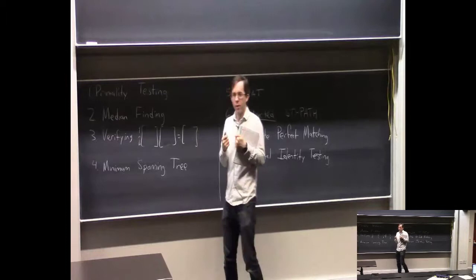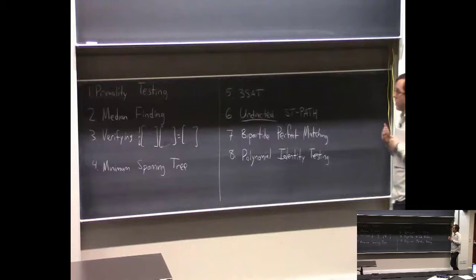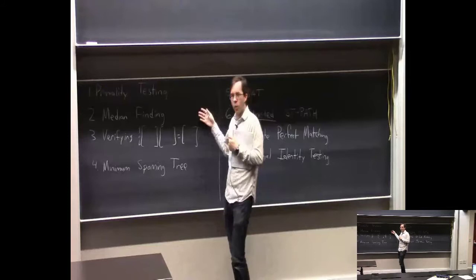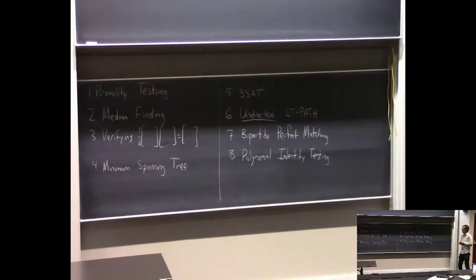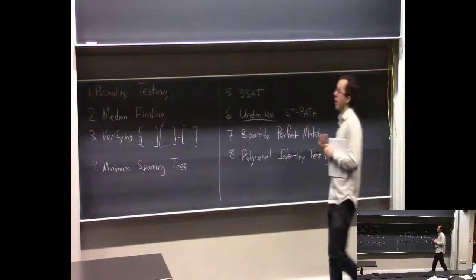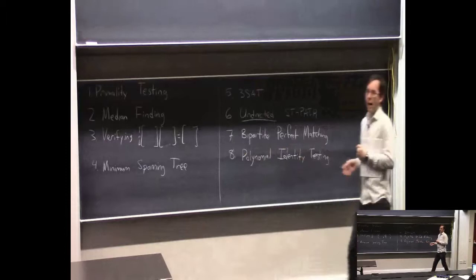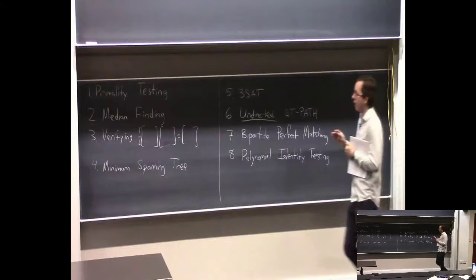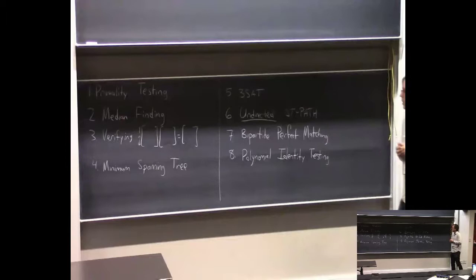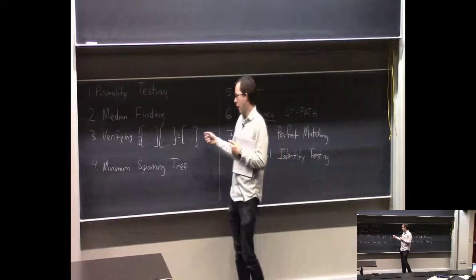Median finding: given an array, find the median. You can do it by sorting in n log n time, but you can actually find the median in linear time O(n). Finding the median with randomness was discovered in the early 60s — it's basically a variant of quicksort called quickselect. If you're only looking for the median, you only have to recurse on one half of the list, so you can do it in linear randomized time. It was a big open problem to do it deterministically in linear time, eventually figured out by Manuel Blum and others in the early 70s. Same asymptotic complexity, but still simpler to do it with randomness.